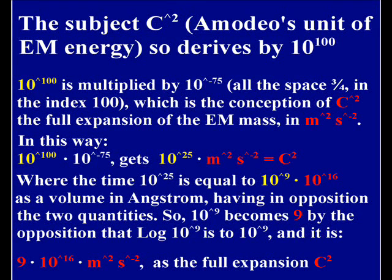Where the time 10 raised to 25 is equal to 10 raised to 9 multiplied by 10 raised to 16 as a volume in Angstrom that has in opposition the two quantities being a volume.